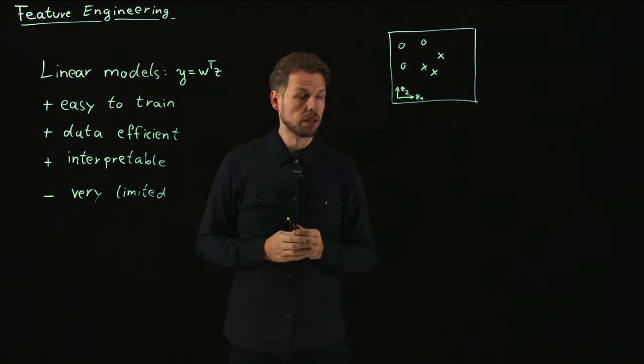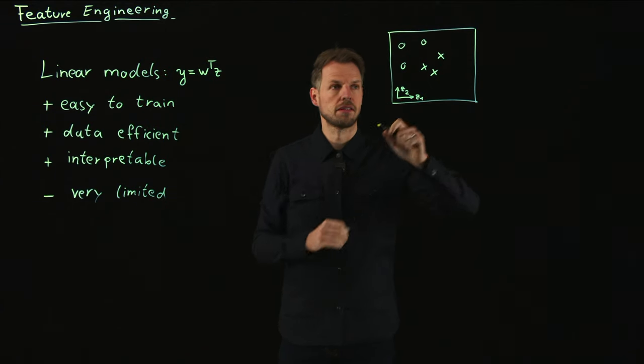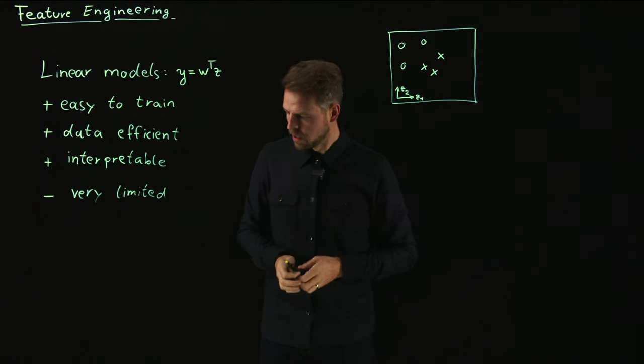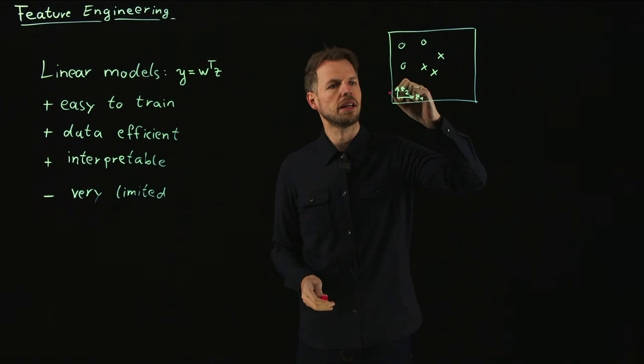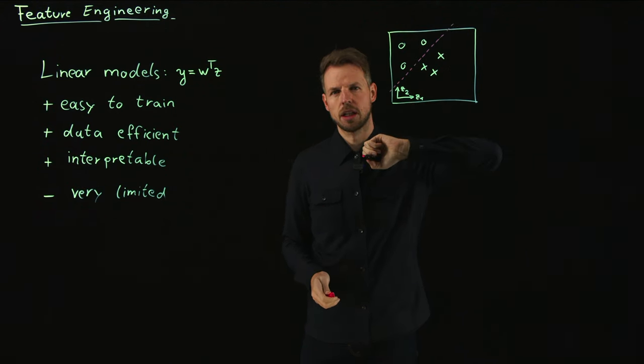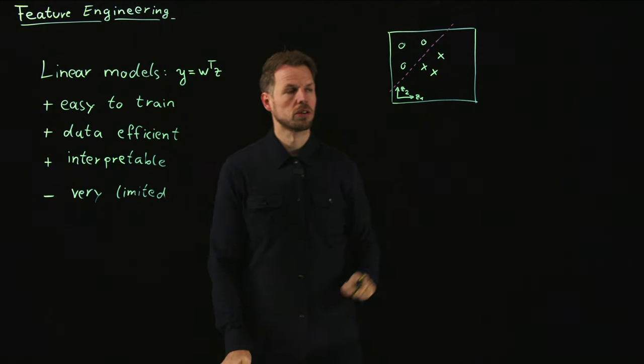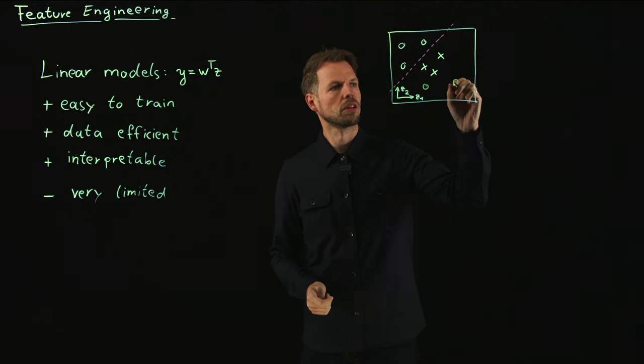So the question is, what can we do? If you're thinking about a classification task as an example, and you have the X's are one class and the O's are another class, then we see that in this setting very easily you can find a linear separation.